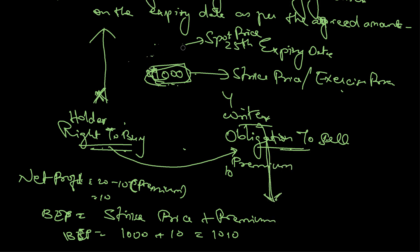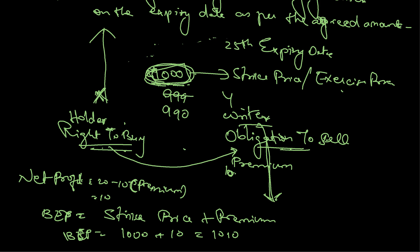If the spot price falls below the strike price — say to 999 or 990 — the holder has the right but not the obligation to buy. Since the asset is cheaper in the market, he will not execute the contract. In that case, his maximum loss is only the 10 rupees premium he already paid, which he cannot get back.